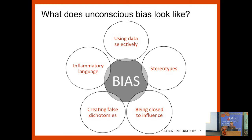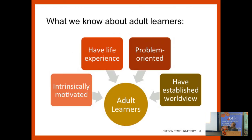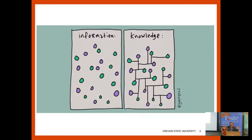Master gardeners are adult learners, and some of the things we know about adult learners are fabulous: they're intrinsically motivated, meaning they're ready to learn; they have life experience and tons of knowledge; they're problem-oriented and want to grapple with things in a really tangible way. And they have an established worldview — this is the area where bias really likes to hang out. Adults come in with a formulated perception of the world. So educators for adults are not building a foundation — we're not formative educators. We are transformative. We're trying to change around the information that's there and connect it in new ways.